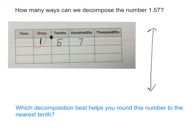I could rewrite one and five tenths as how many tenths? Fifteen tenths. And then my seven hundredths are still there. What if I didn't want to use any tenths — if I only wanted to express this number using hundredths, how many hundredths would I have, Aaliyah? One hundred fifty-seven hundredths.